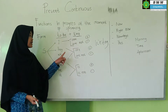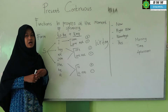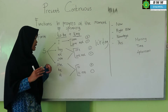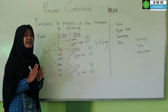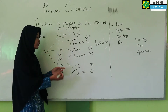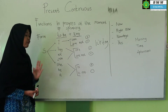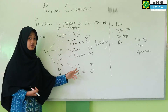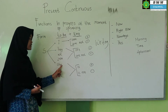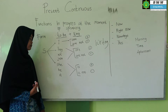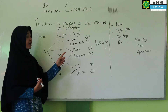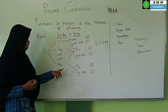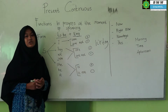For interrogative sentences, the to be is placed at the beginning of the sentence. For example, 'apakah dia perempuan sedang menulis?' (Is she writing?). 'She' — so to be 'is' comes first: 'Is she writing?' That's how it works. The to be is placed at the start, followed by the subject, then the verb. For example: Is she writing? Are you writing?